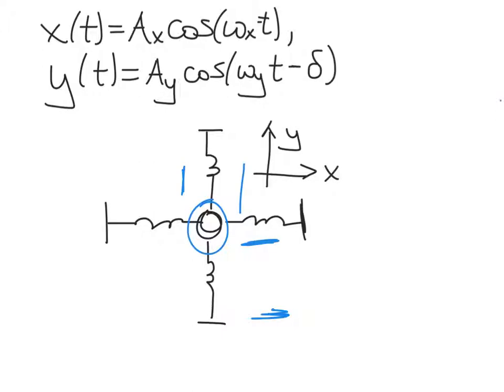When you actually work through the differential equations, what you find is you can get solutions for x and y that look like these two equations at the top. x(t) is going to be some ax — that's the amplitude along the x direction — times cosine of omega_x times t. This expression does not involve a phase constant. The idea is we're choosing t to start at a time so that at t equals zero, x is defined to be x-naught, the initial position, and the initial velocity along the x direction is assumed to be zero.